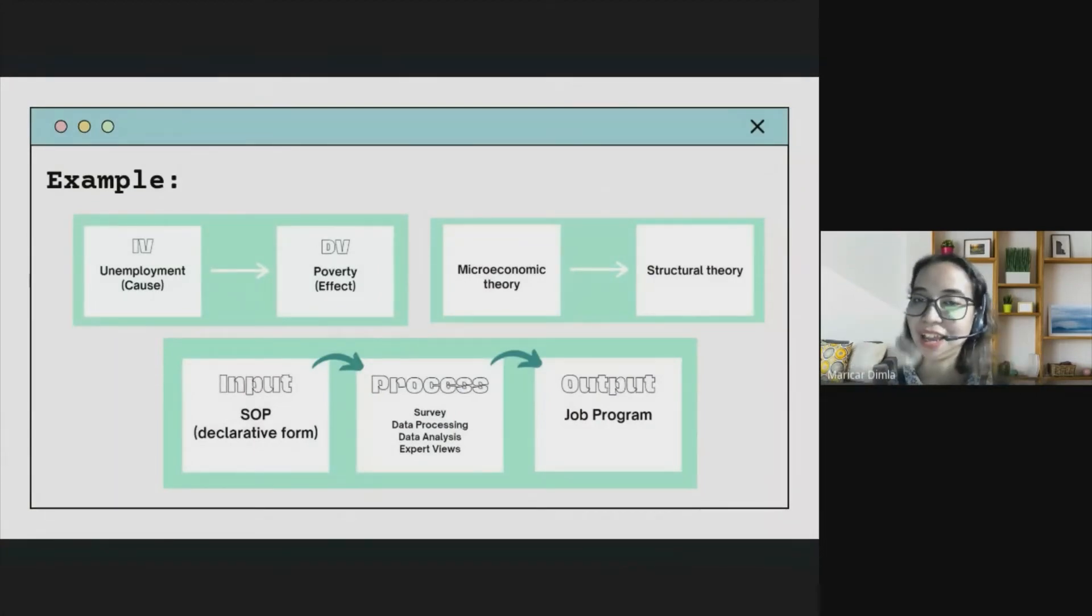To sum it up class, conceptual framework is tandem with related literature and studies. When we say conceptual framework, we are talking about the related literature and studies plus the variables connected with your ongoing study. The related theory plus theoretical framework is for answering the how and why your study exists or is existing. And the operational framework is for the output, intended for the output of your study. So class, if someone asks: Ma'am can we not have an operational framework? Yes, especially if there's no output derived after getting the findings of the study.